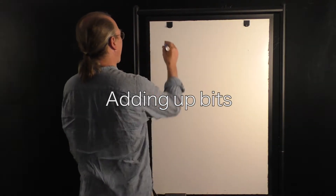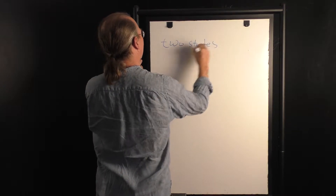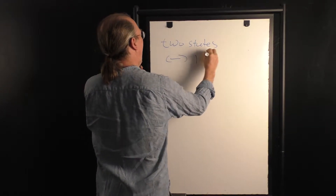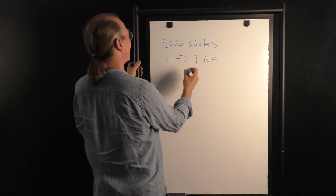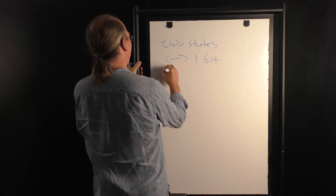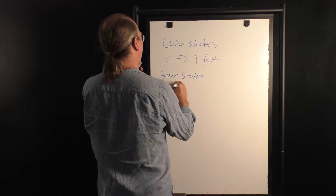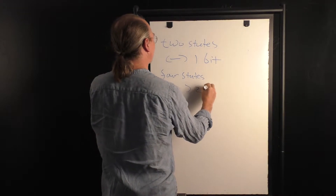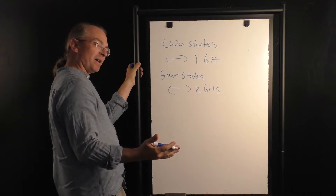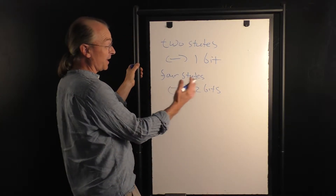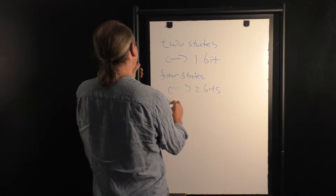Anything that has two states corresponds to one bit — heads or tails, true or false, zero or one. If you have four states, that corresponds to two bits. But what corresponds to three bits? Would it be six states? No. Actually, what happens is that you have eight states.